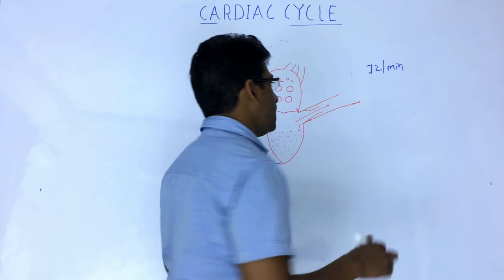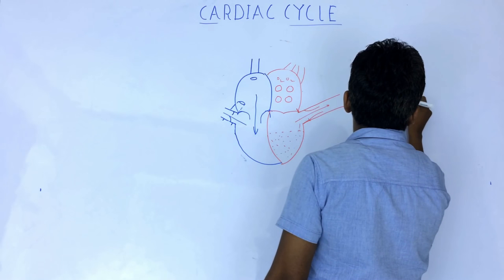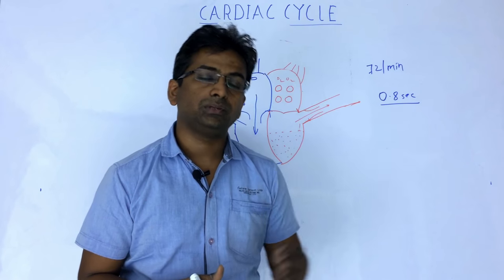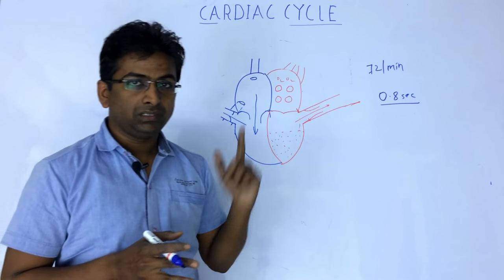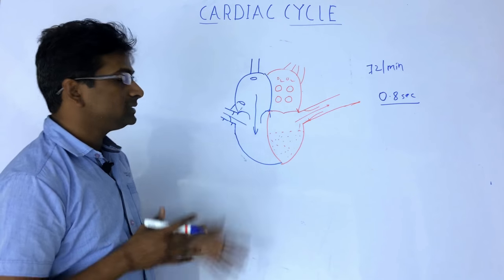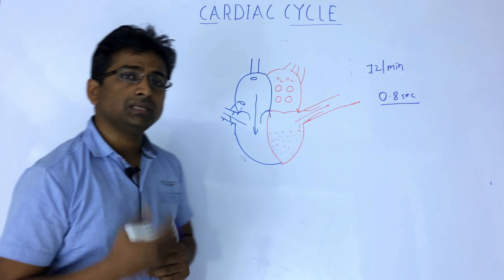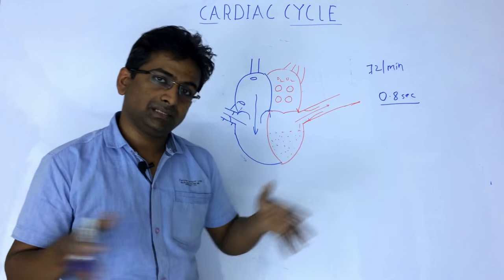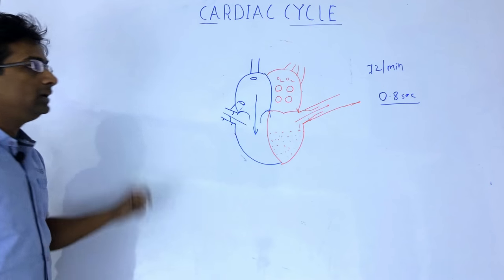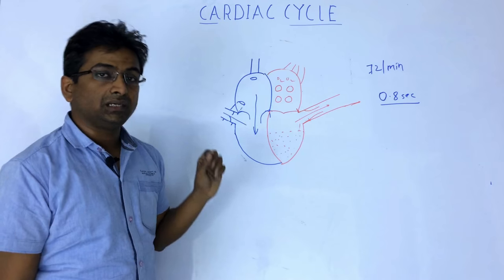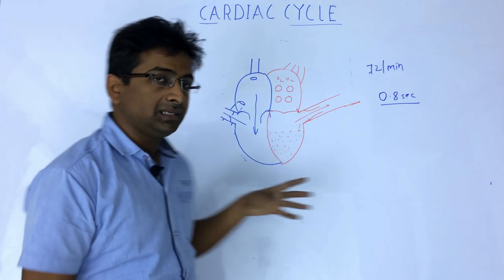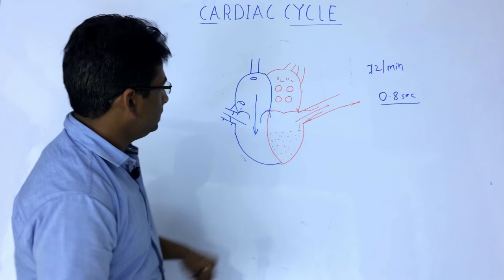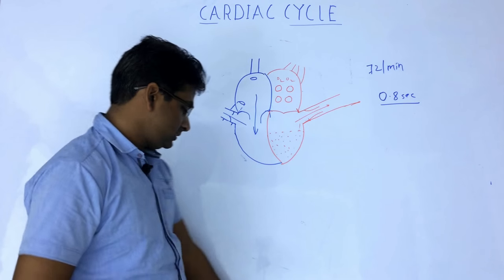If the heart rate is 60 per minute, the cardiac cycle duration would be one second. The cardiac cycle duration varies with heart rate: when heart rate is high, the cycle is shortened; in bradycardia the duration widens. Considering a heart rate of 72 beats per minute and duration of 0.8 seconds, the ventricle and atria each contract and relax within that period. Next we will see the events that occur in the cardiac cycle.